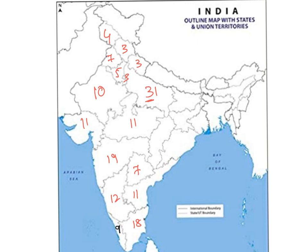Coming back to Andhra Pradesh (11 seats), subtract 1 and it will become 10 seats allocated to Odisha. Divide 10 by 2 and it will become 5 for Chhattisgarh. Add 1 more to Chhattisgarh's 5 and it becomes 6 for Jharkhand. Add 10 and 6 and it will become 16 seats for Bihar. The same 10 plus 6 gives 16 seats for West Bengal as well.